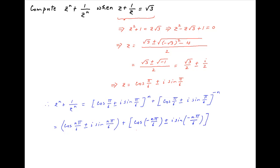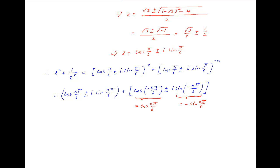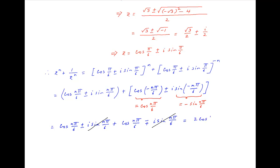Now note that cos(−nπ/6) is equal to cos(nπ/6), and sin(−nπ/6) is equal to −sin(nπ/6). Therefore the value of zⁿ + 1/zⁿ equals cos(nπ/6) ± i·sin(nπ/6) plus cos(nπ/6) ∓ i·sin(nπ/6). The imaginary terms cancel out, and the expression simplifies to 2·cos(nπ/6), which is the required answer.